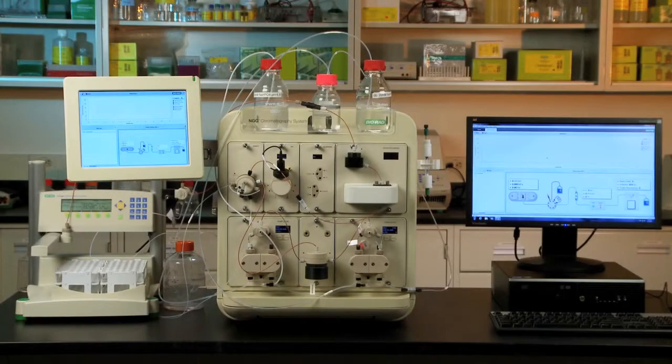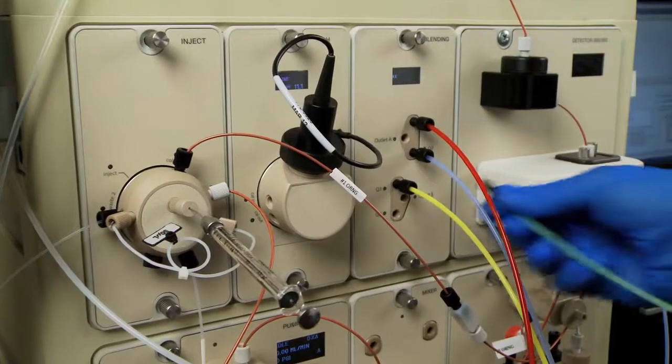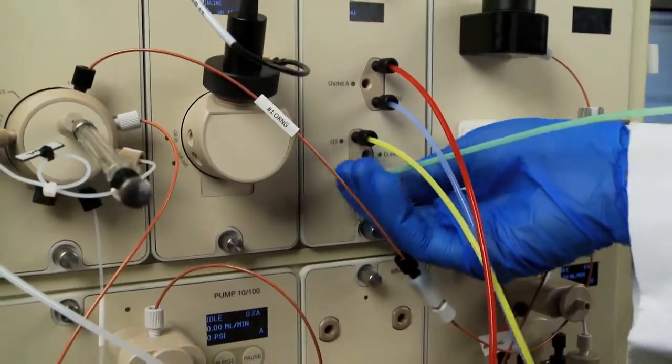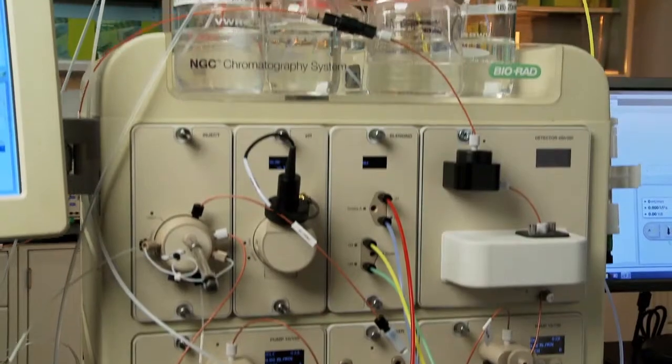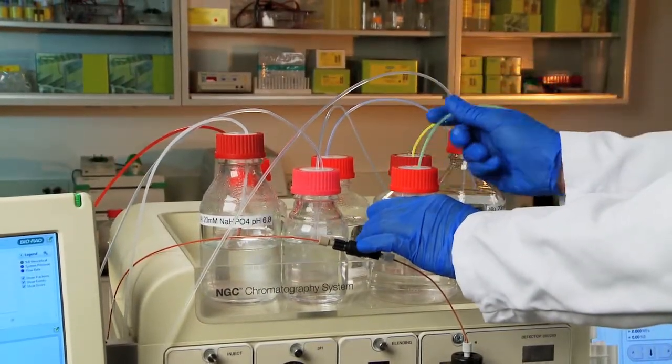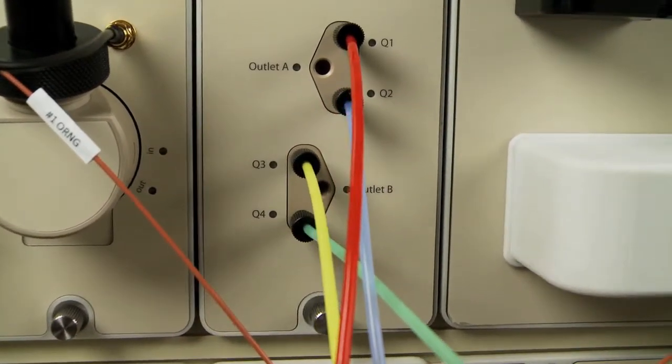Scout systems now require plumbing of the buffer blending valve and pH valve. Plumbing the buffer blending valve: Connect the inlet lines to ports Q1 through Q4 on the buffer blending valve. Place the open end of each line into its intended buffer bottle.